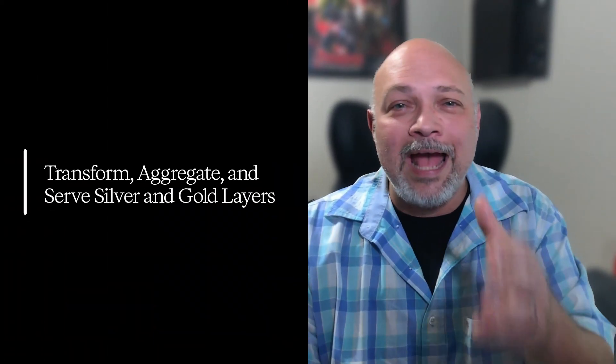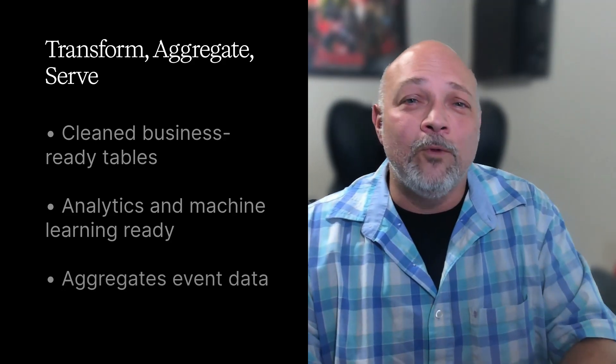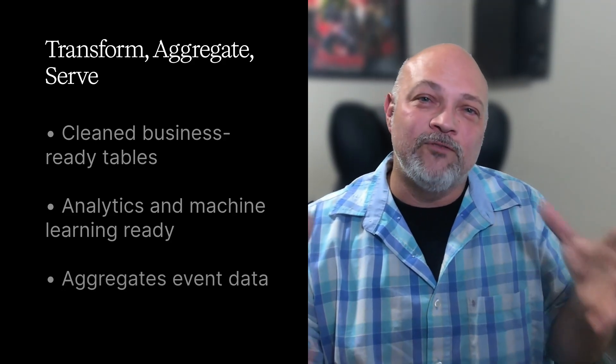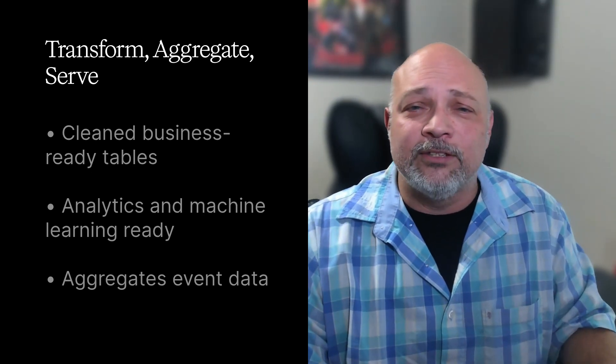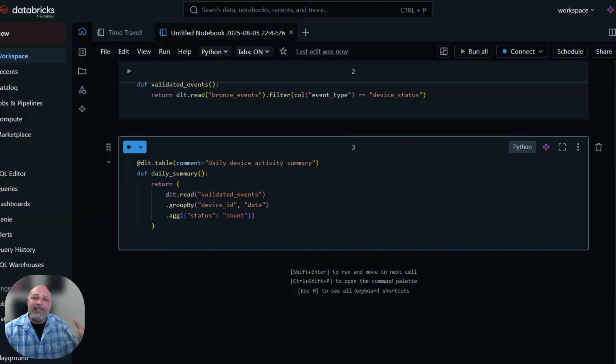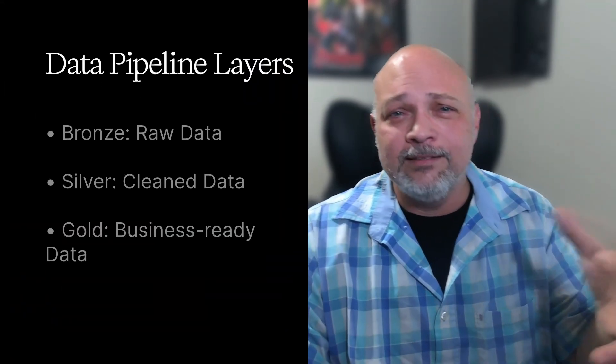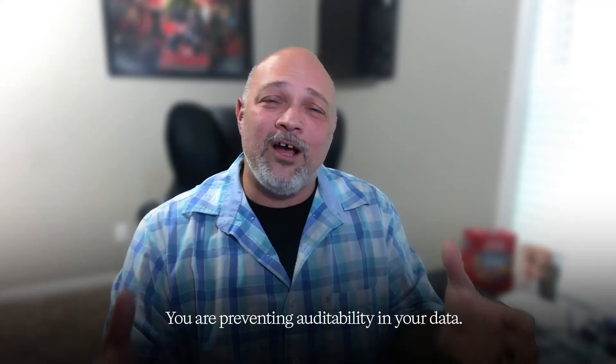Step three: transform, aggregate, and serve silver and gold layers — cleaned, business-ready tables for analytics, machine learning, and other downstream applications. This code aggregates validated event data to create daily activity summaries per device. We're grouping by both device ID and date, and counting the number of status events. This output table is easy for analytics dashboards and machine learning workflows to consume — no more massaging raw logs downstream. DLT shines when you treat each step as a layer: bronze, silver, gold. Mixing business logic into the raw step makes life harder for your team and prevents auditability in your data.